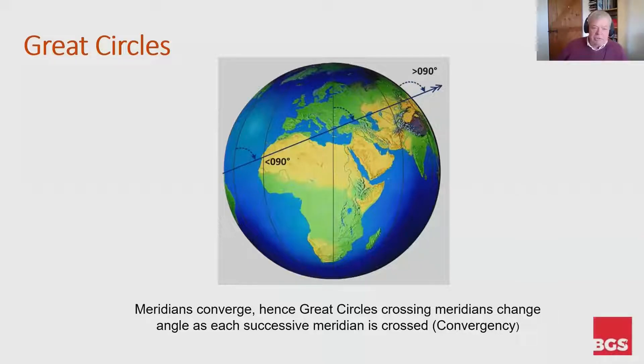The meridians converge, so the great circle crossing the meridians change the angle as each successive meridian is crossed. And that's what this concept of convergency means. It means that between any two points, the great circle track will change.